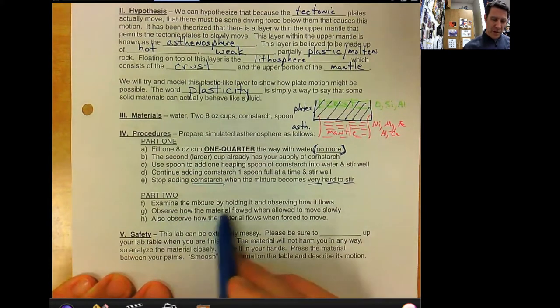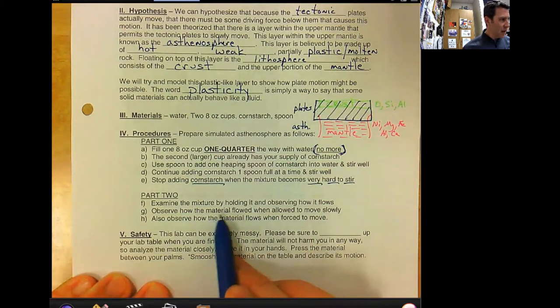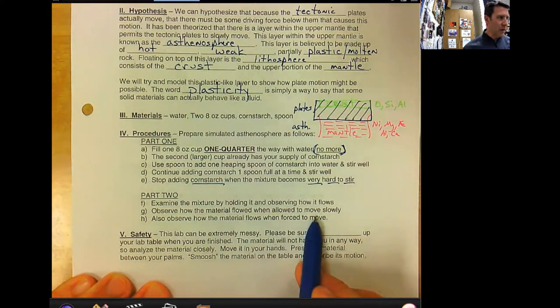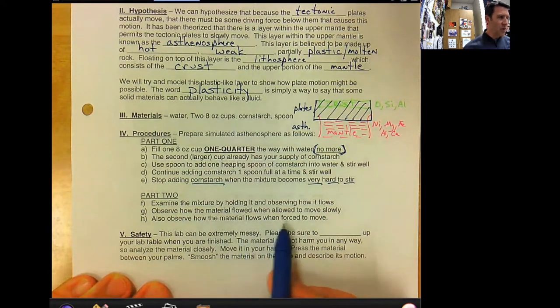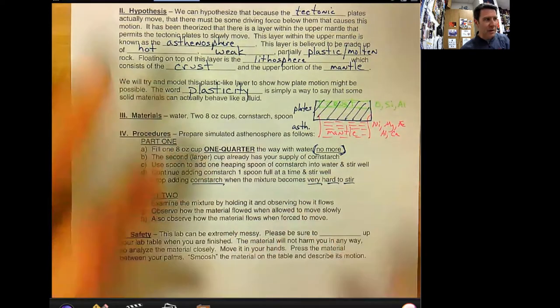Examine the mixture by holding it, observing how it flows. Pour it out of the cup, see how it flows when allowed to move slowly. Observe how the material flows when forced to move. Push it with your hands, roll it up into a ball, knead it and push it together, and then allow it to flow.